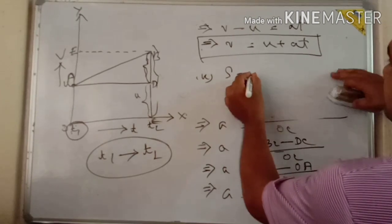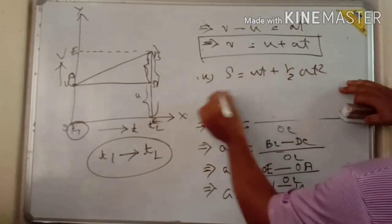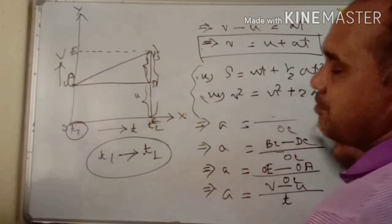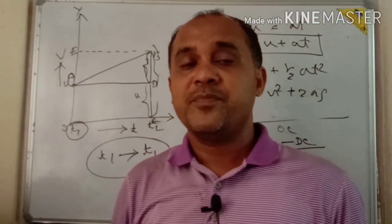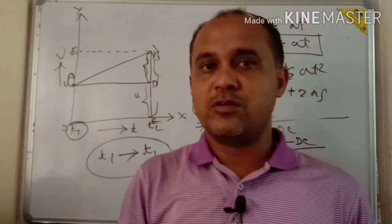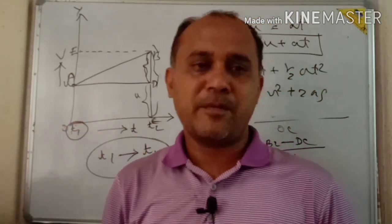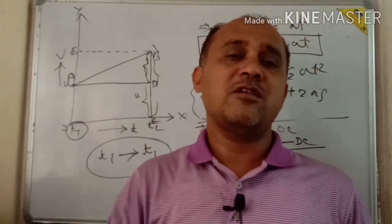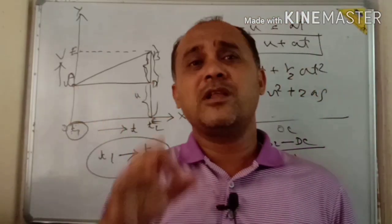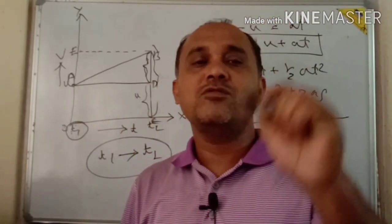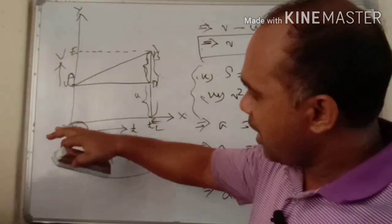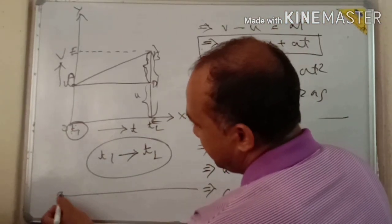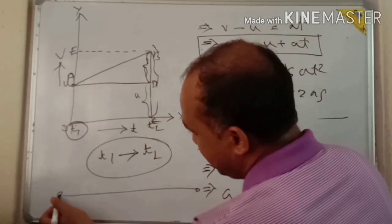s equal to ut plus half a t squared. Next, the third equation: v squared equal to u squared plus twice a times s. I will explain these two equations of motion. I will show each pointer in the next video.